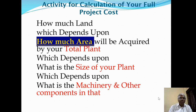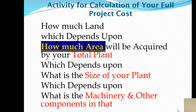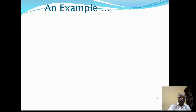Now let's start the activity for calculation of full project cost. How much land is required depends on the total plant area, which consists of open space and covered space. The covered space depends on the size of your plant capacity. For example, a 5,000 liters-per-hour plant will have a different size than a small jar plant. The starting point is knowing your machinery specifications so you can calculate the construction cost of the shed.